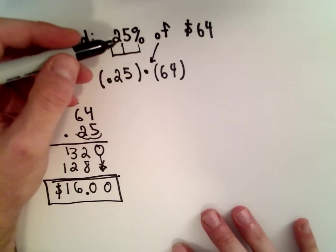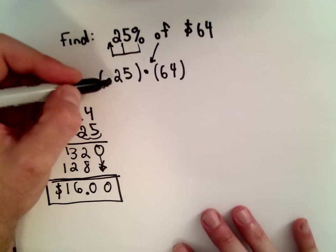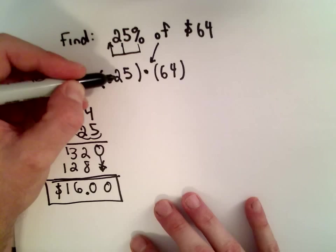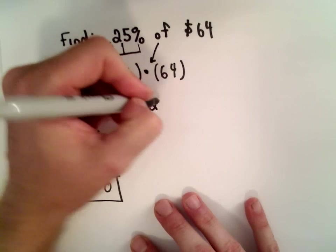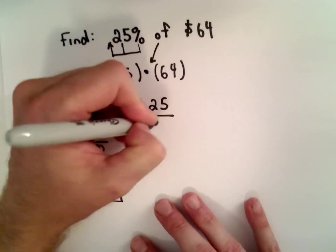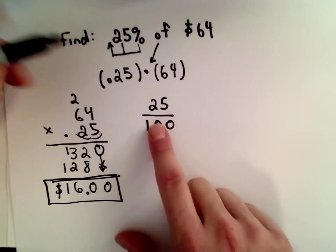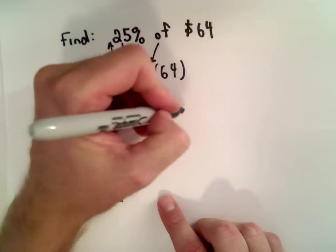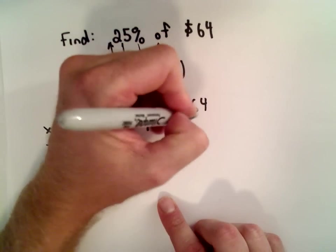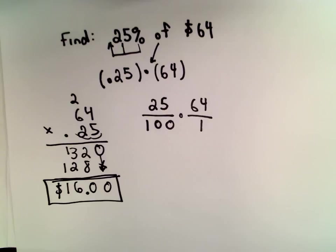Another way to do it would be to think about it in terms of fractions. Well, 0.25, we could write 0.25 as a fraction by writing that as 25 over 100. Again, that's equivalent to being 25%. And, we're just going to multiply that by 64 over 1.